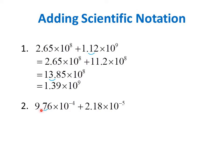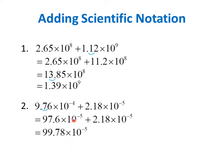To do that, if we want to make this exponent equal to negative 5 — that is, smaller by 1 — we have to move the decimal point 1 place to the right. So 9.76 becomes 97.6 times 10 to the negative 5. Then we copy the second term. Since they now have the same exponent, we can add the coefficients. 97.6 plus 2.18 is 99.78, then we copy times 10 to the negative 5.